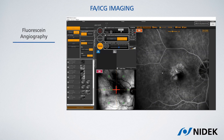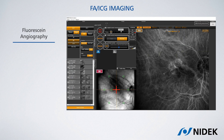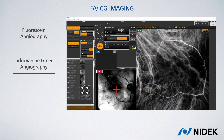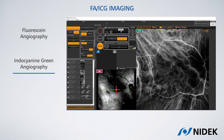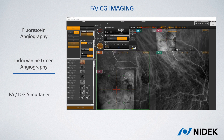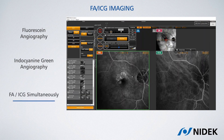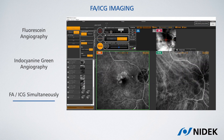Dynamic fluorescence angiographies can also be taken, as well as dynamic indocyanine angiographies, or even both FA and ICG at the same time if you've injected the two dyes simultaneously.